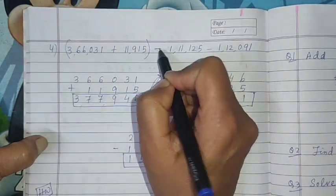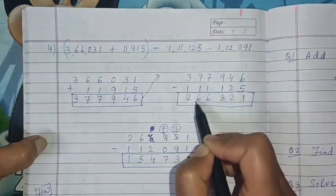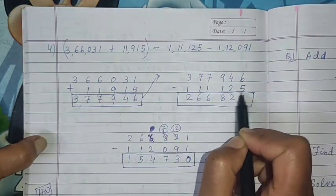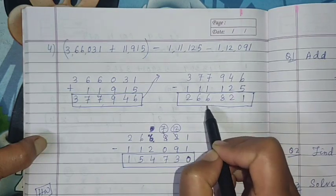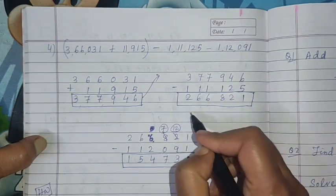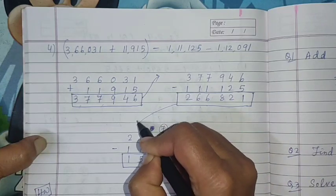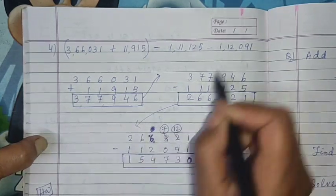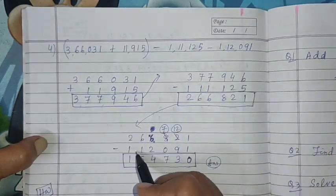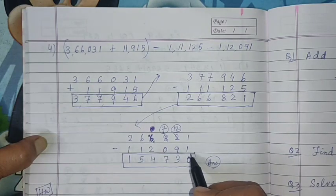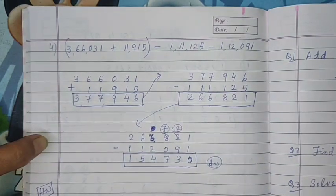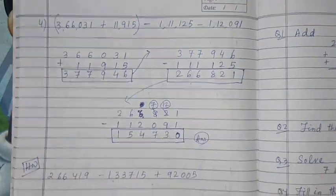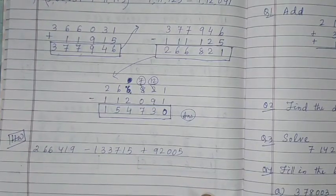Then minus 1,11,125. Then you subtract, whatever answer you got, that again you write separately here. Then last number is left, minus 1,12,091, and you will get the answer 1,54,730.